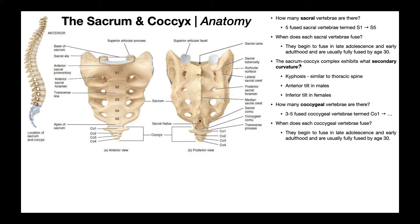The next question is: the sacrum-coccyx complex exhibits what secondary curvature? Remember, at some point after infancy, the spine develops secondary curvatures in each of the main regions. The cervical spine and the lumbar spine each have characteristic lordosis, and the thoracic spine has a normal kyphosis.